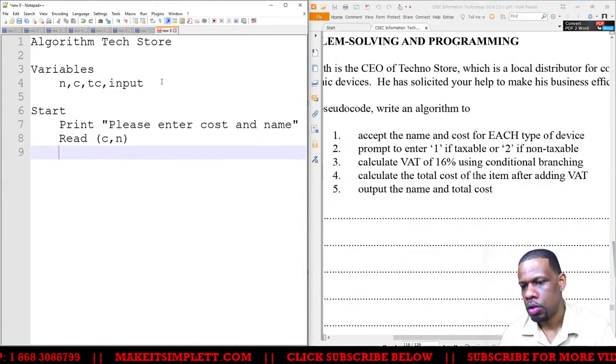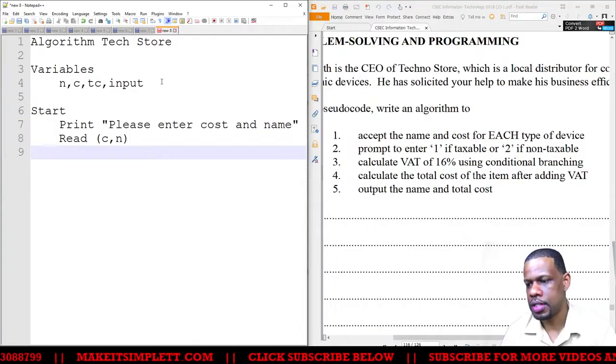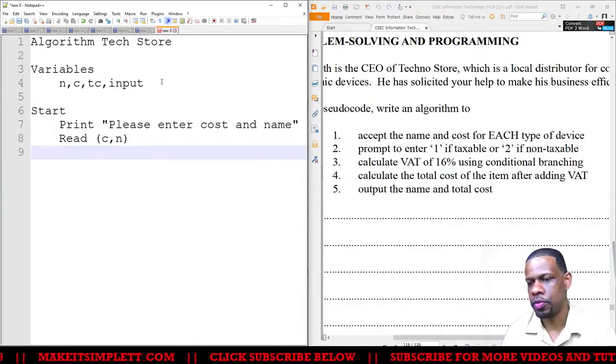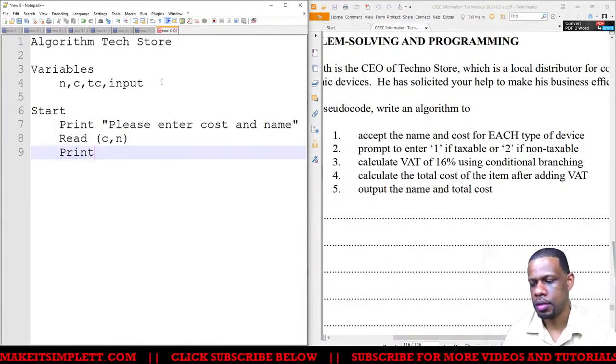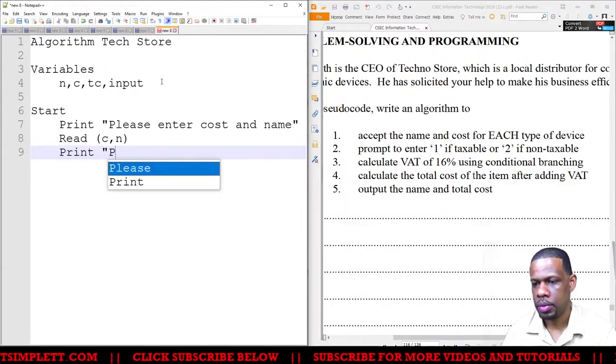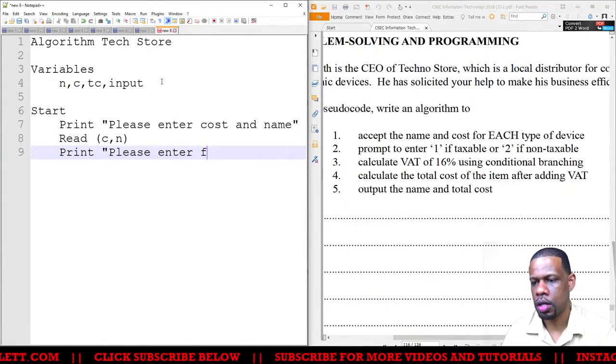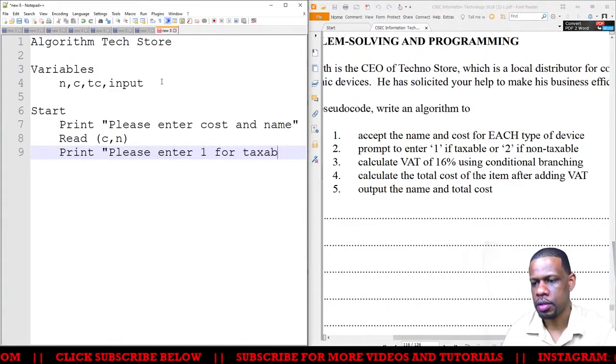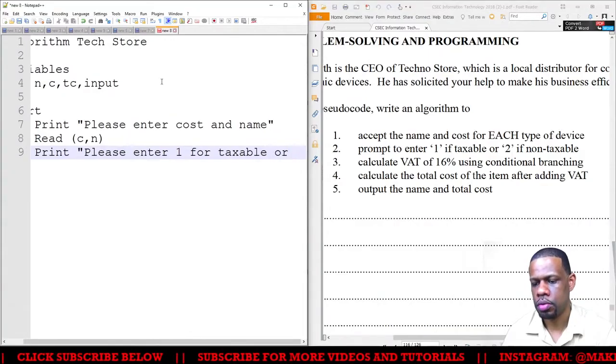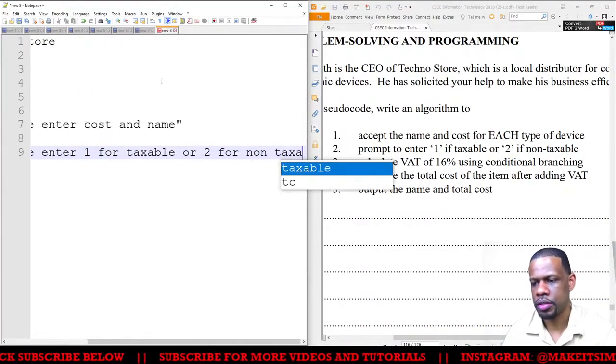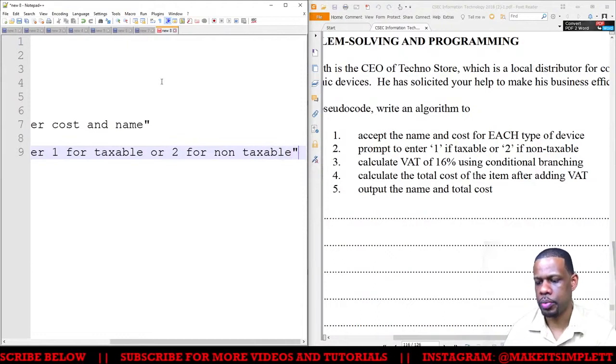So I'm going to print again: 'Please enter 1 for taxable or 2 for non-taxable.' And then I end up in all that.